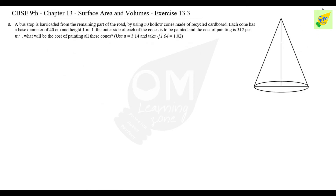Each cone has a base diameter of 40 centimeters and height 1 meter. If the outer side of each cone is to be painted and the cost of painting is ₹12 per square meter, what will be the cost of painting all these cones? Given: π is 3.14 and √(1.04) is 1.02.